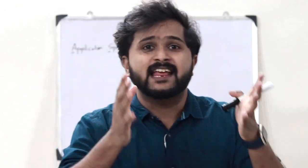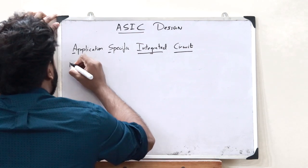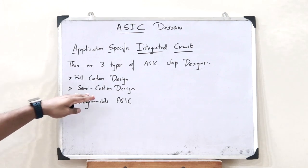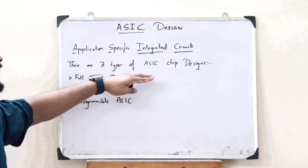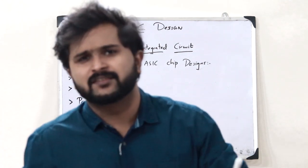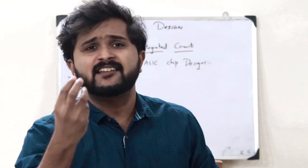This is simply what you refer to as an ASIC or an Application Specific Integrated Circuit — an integrated circuit designed for the purpose of doing a specific function or application. There are three types of ASIC designs: the first is a full custom design, the second is a semi custom design, and the third is a programmable ASIC.